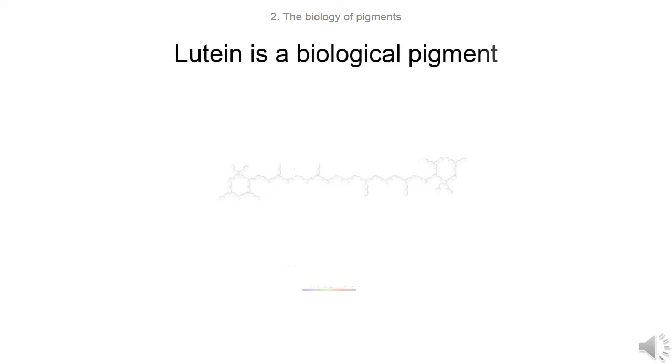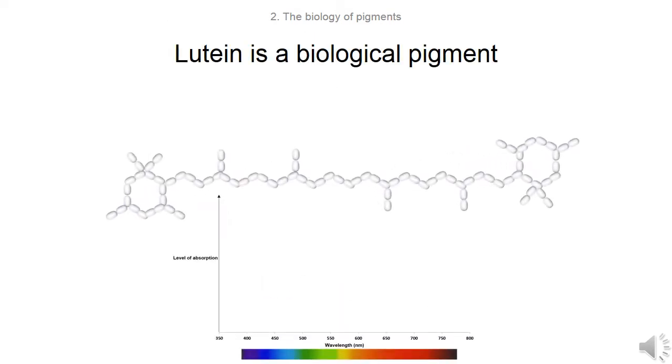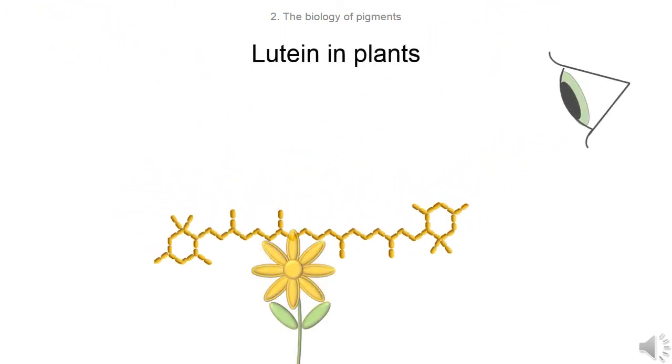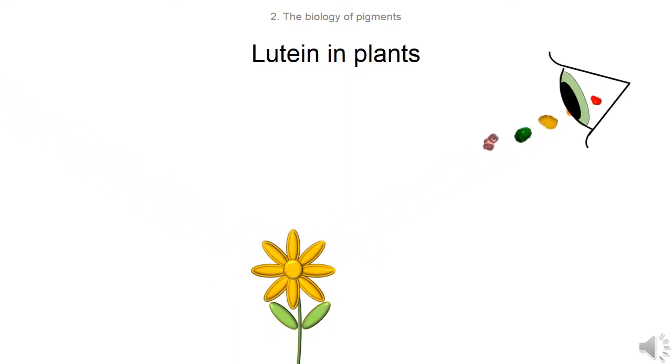Lutein is a biological pigment. It absorbs high energy blue light and reflects the rest, making it appear yellow. Lutein is found in plants. Reflected photons interact with receptors in our eyes and produce a coloured image.